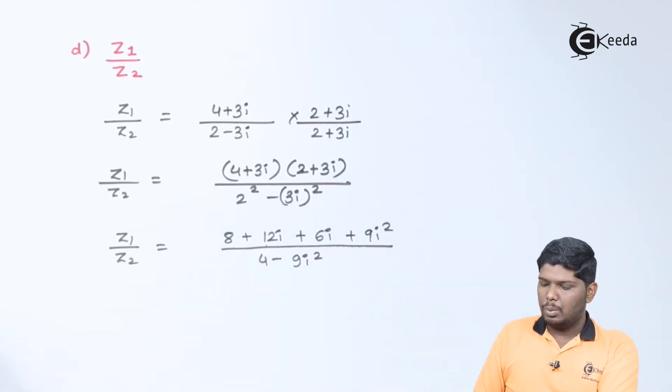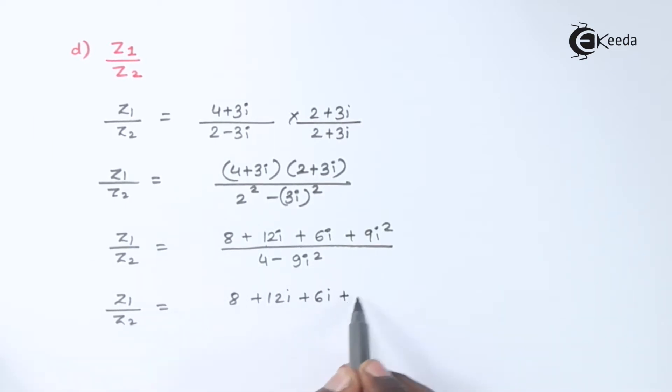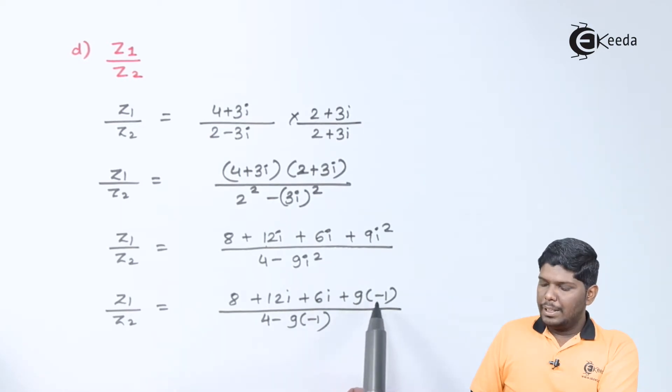Now, we can substitute i square as minus 1. This will give you plus into minus as minus 8 minus 9. And in the denominator, we have minus of minus plus and 4 plus 9 will give you 13.